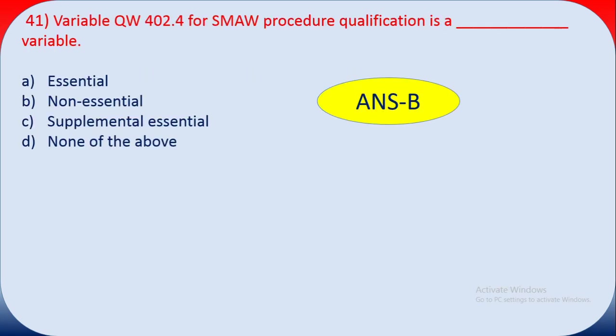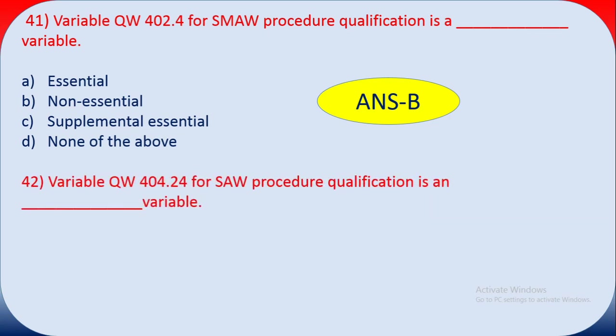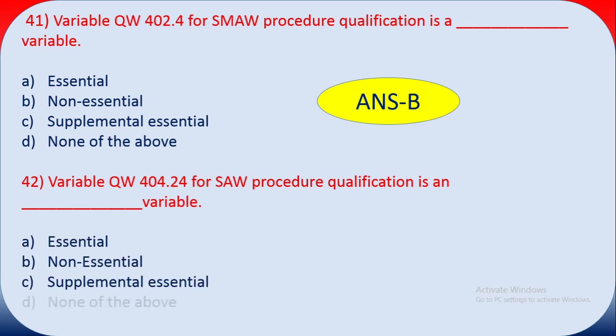Question forty-one: variable QW-402.4 in ASME Section 9 for welding procedure qualification is a non-essential variable. Question forty-two: variable QW-404.24 for SAW procedure qualification is — options: A essential variable, B non-essential variable, C supplementary essential, D none of the above. The answer is A — essential variable.